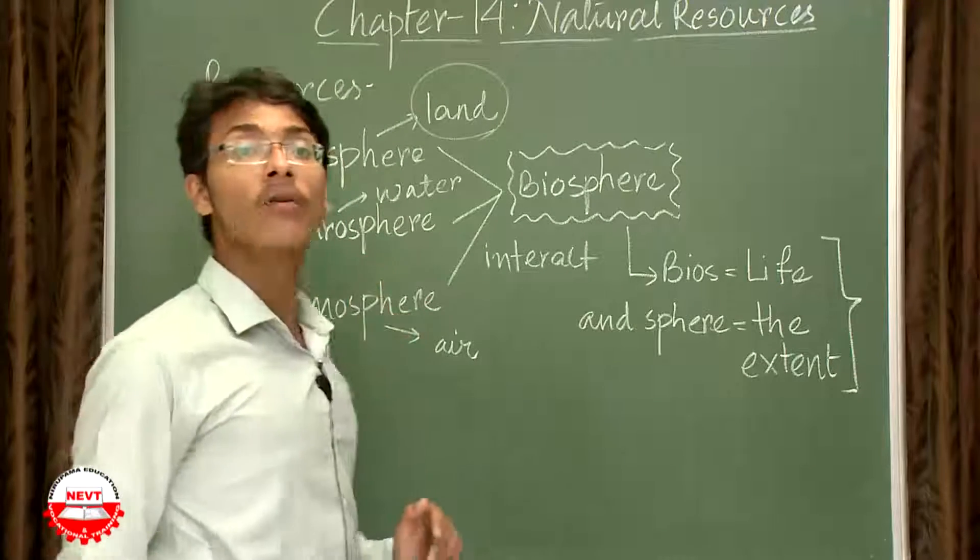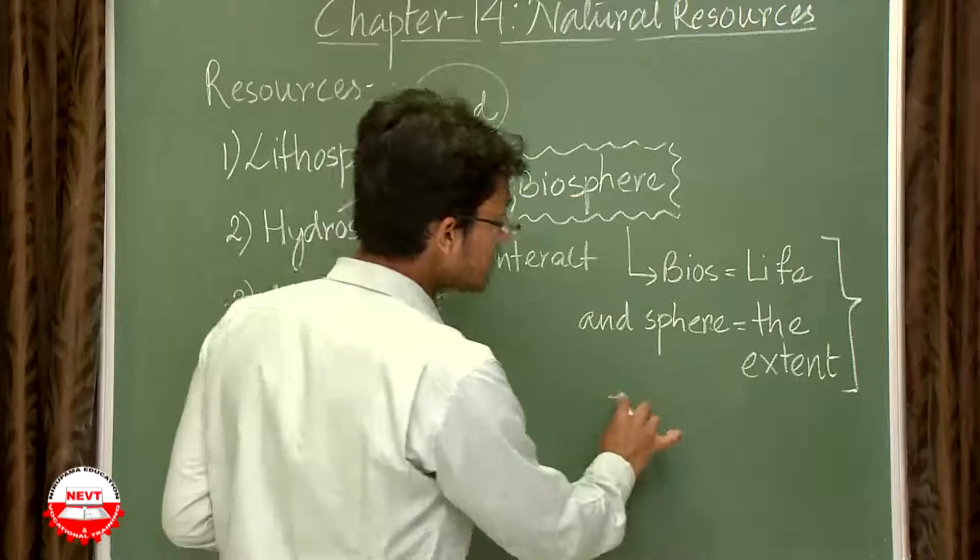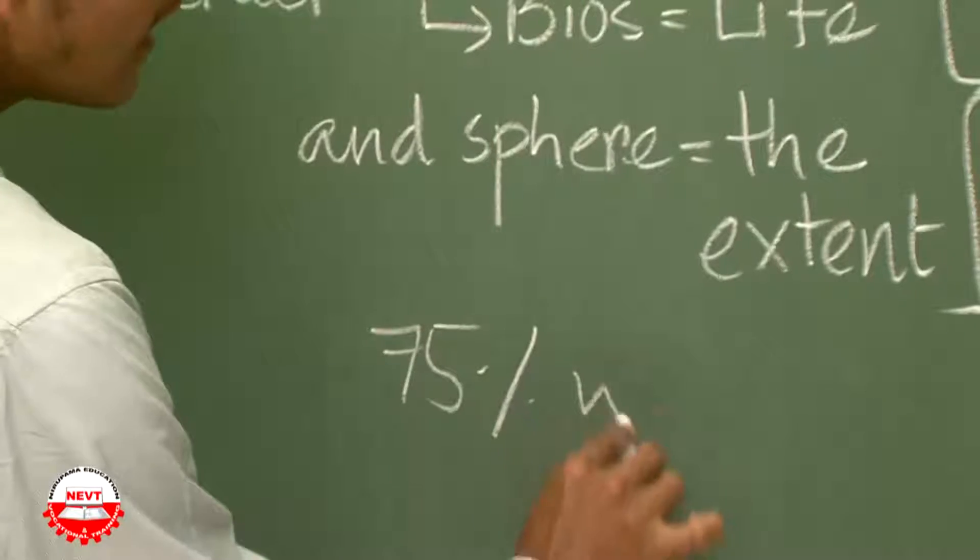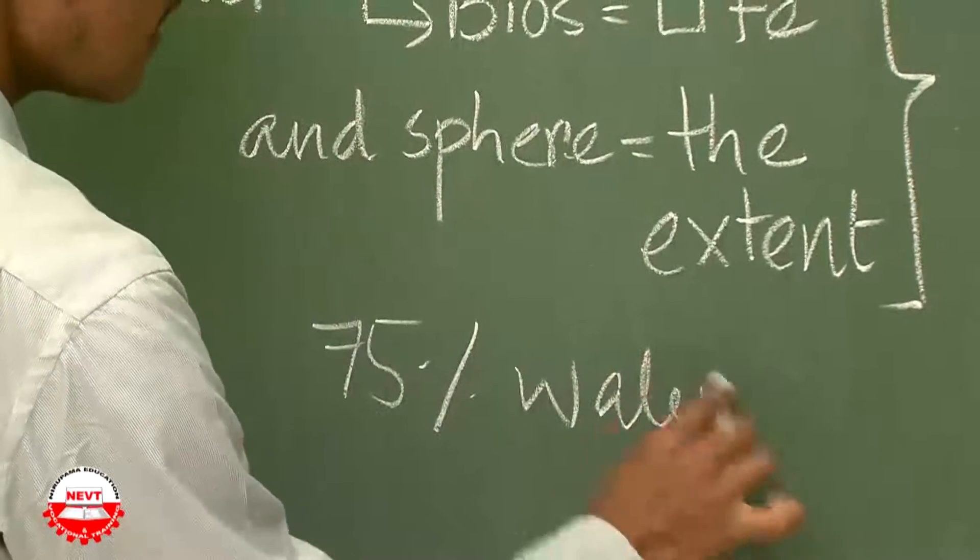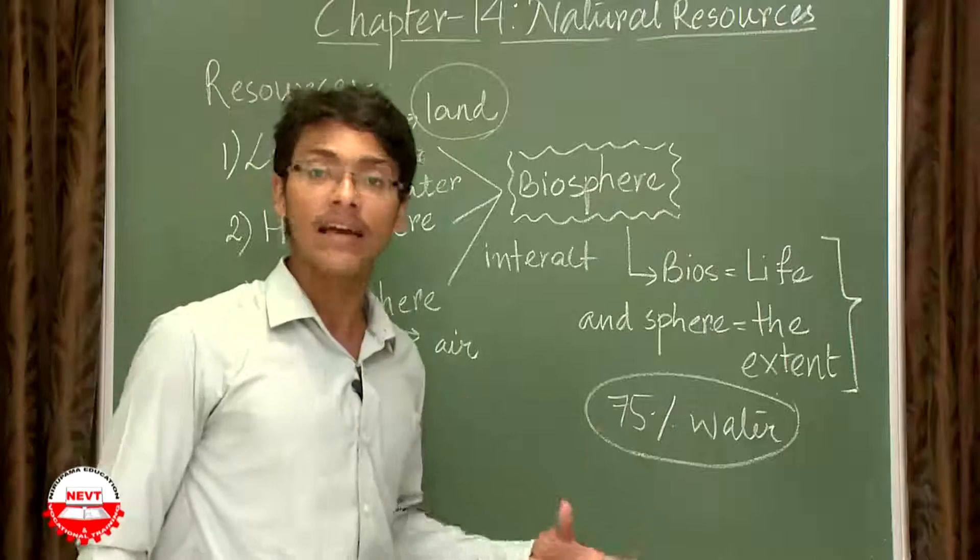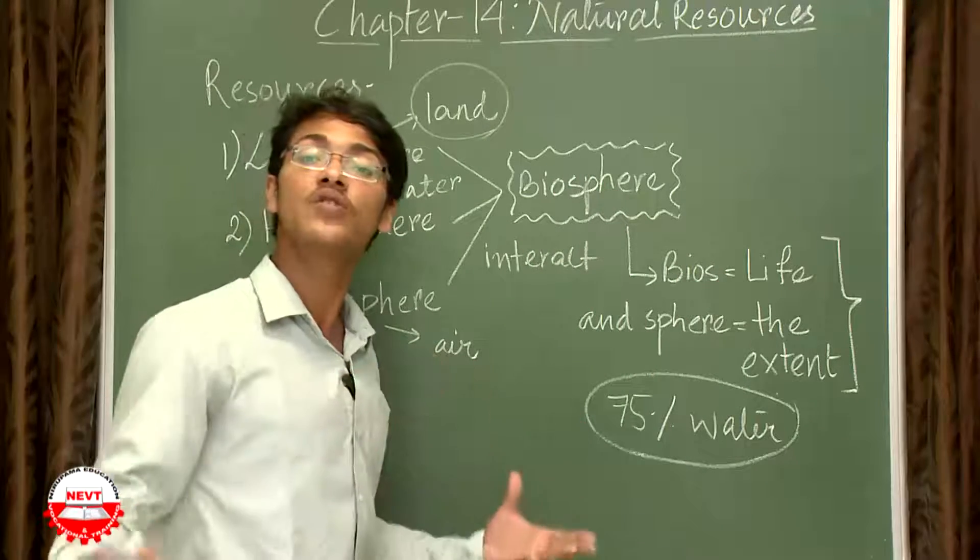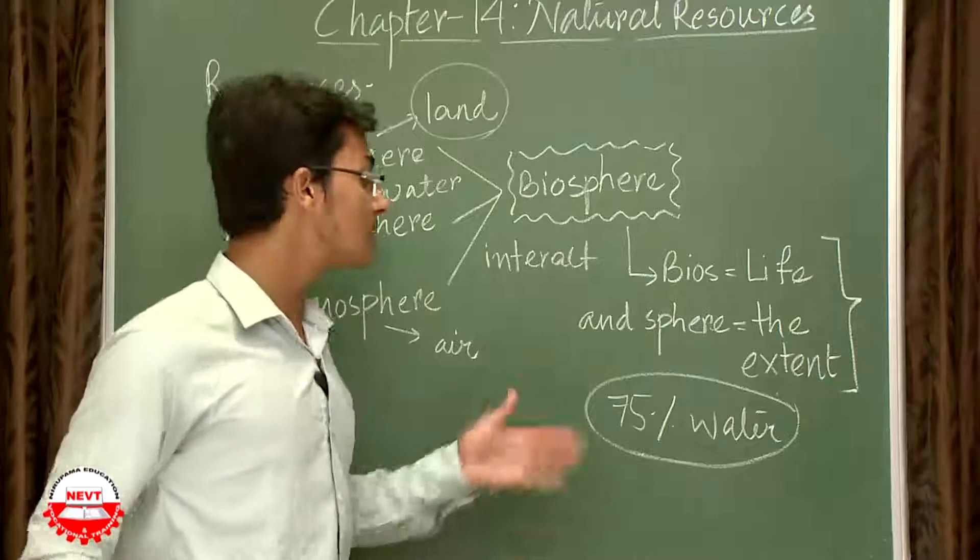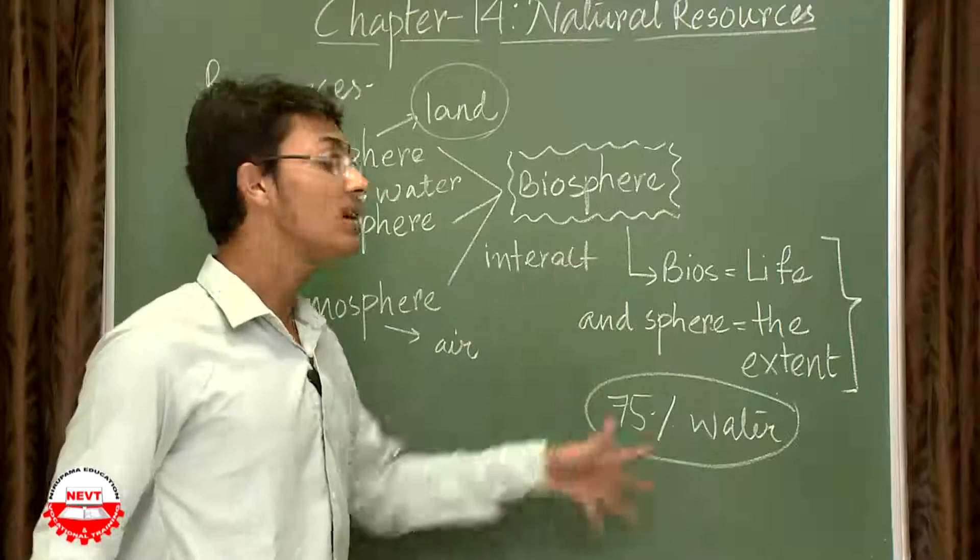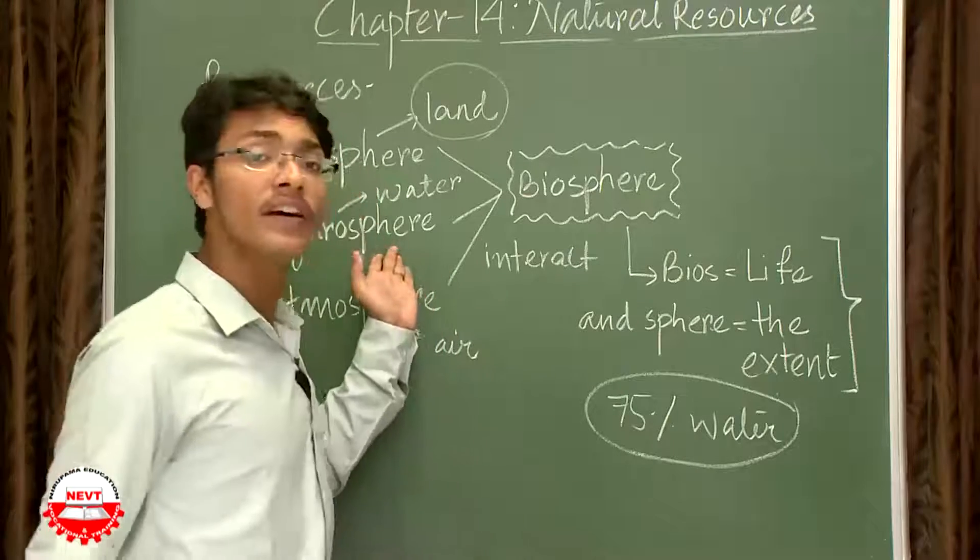Similarly, the hydrosphere will take into account the water. And to our great surprise, the entire Earth is covered by 75 percent of water. And that is why whenever a satellite image of Earth is being viewed from space, the Earth seems to be blue because there is 75 percent of the water covering the Earth.